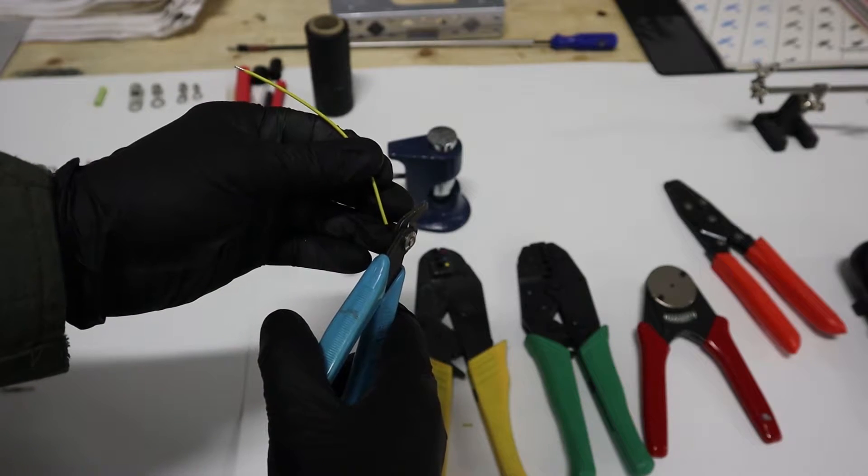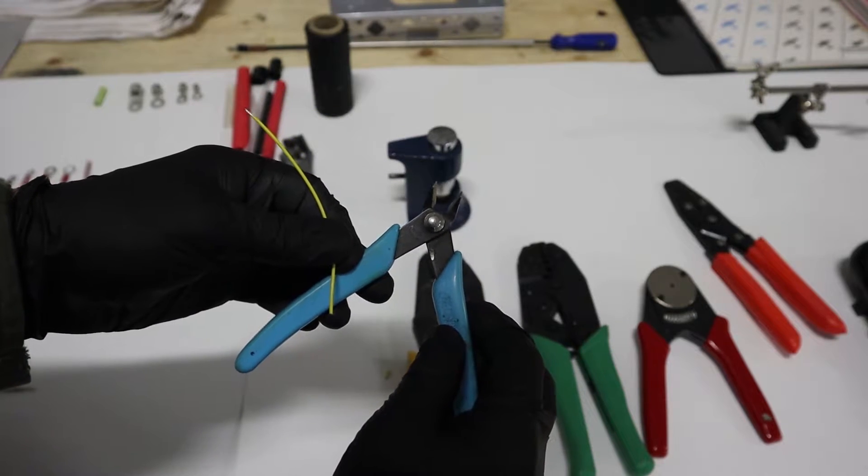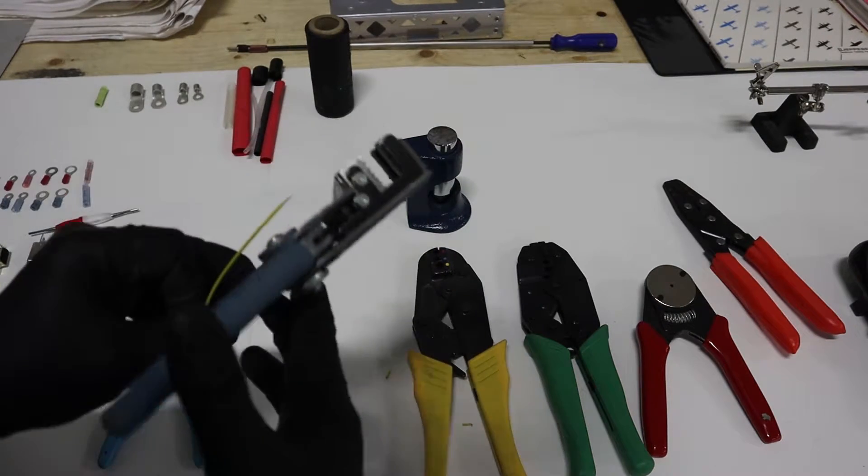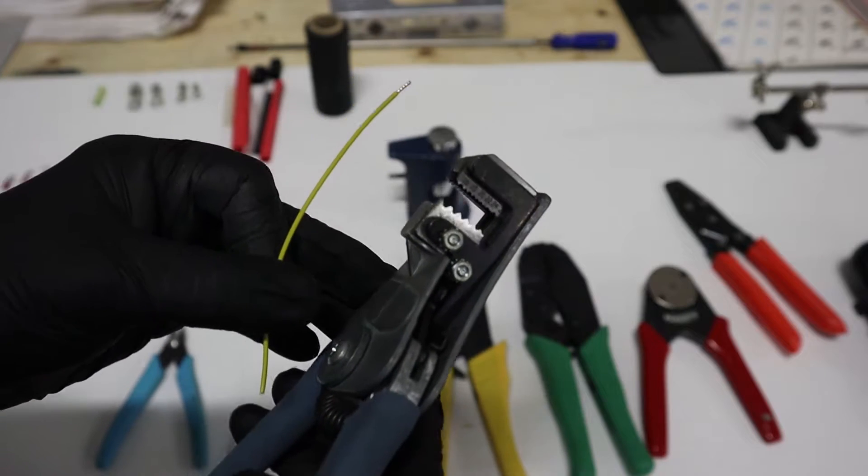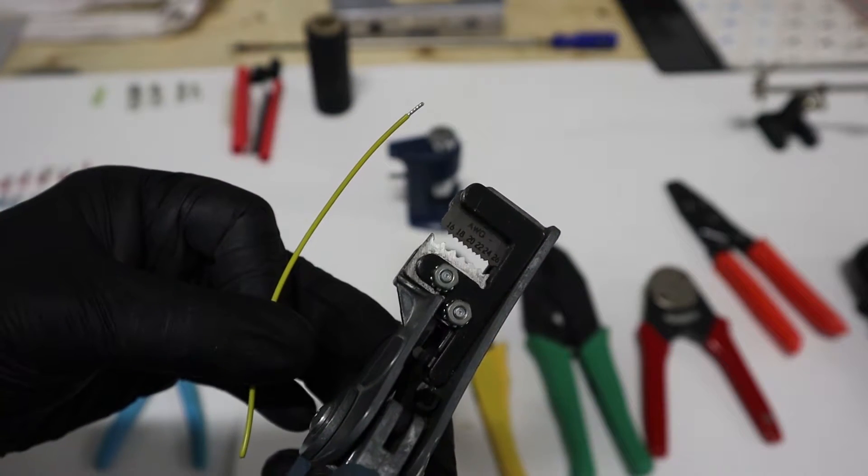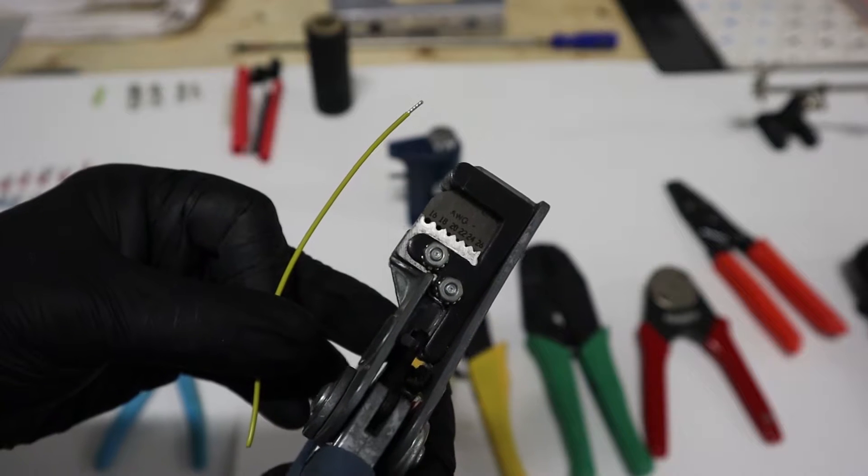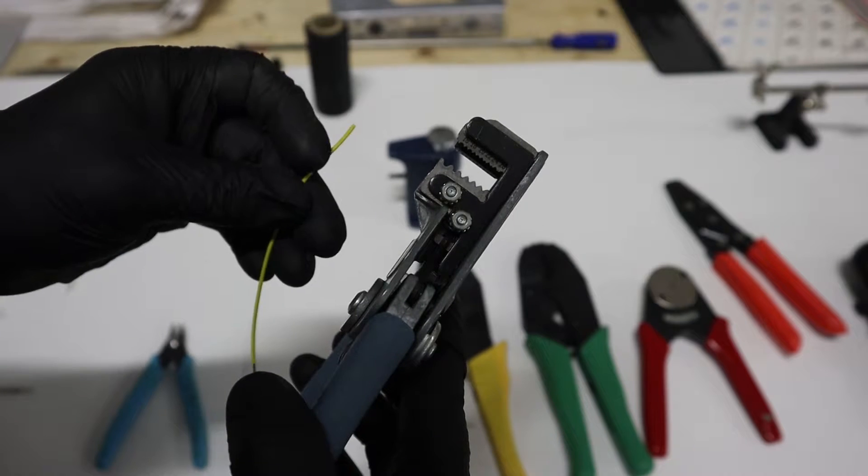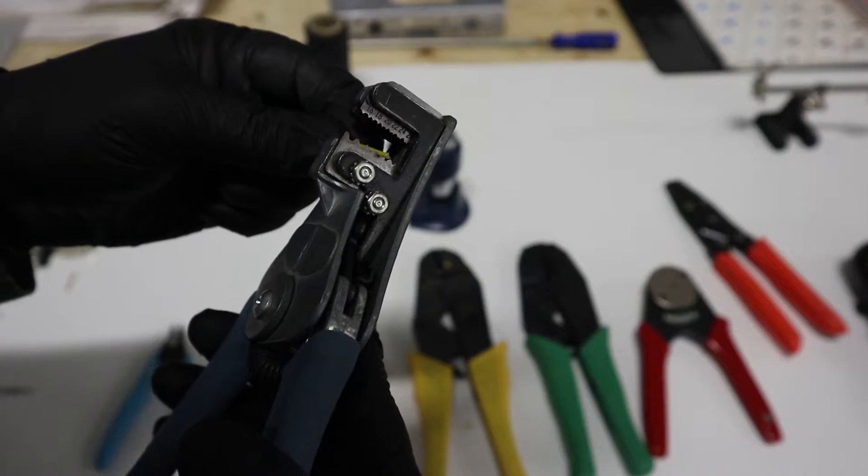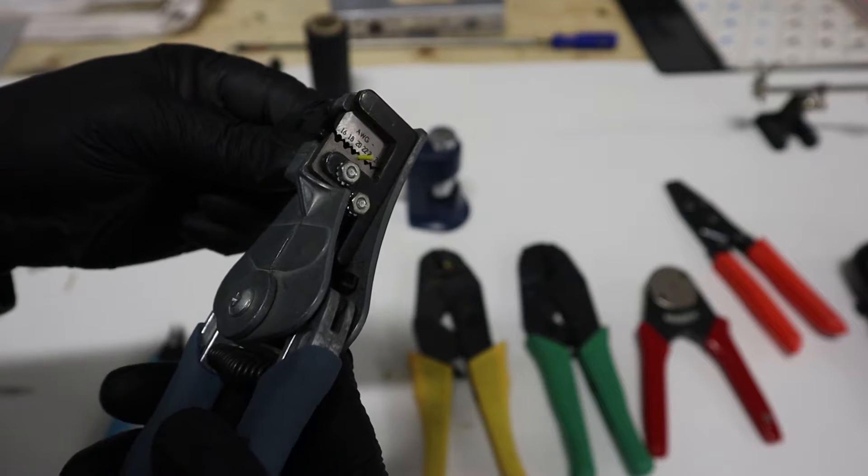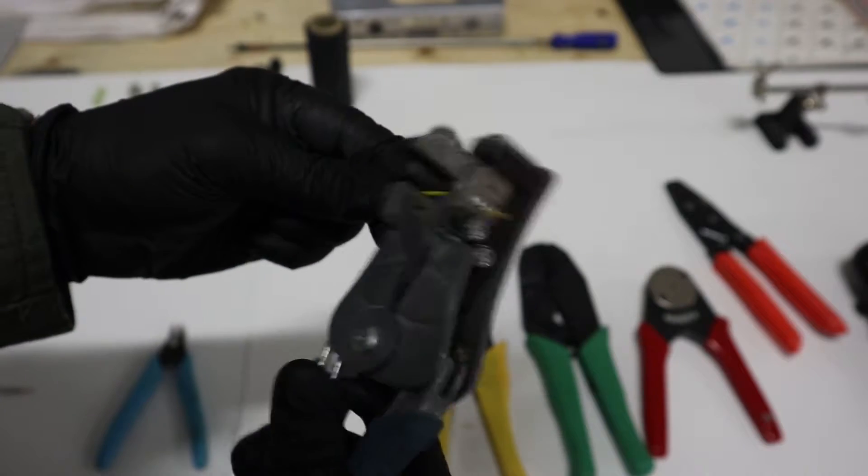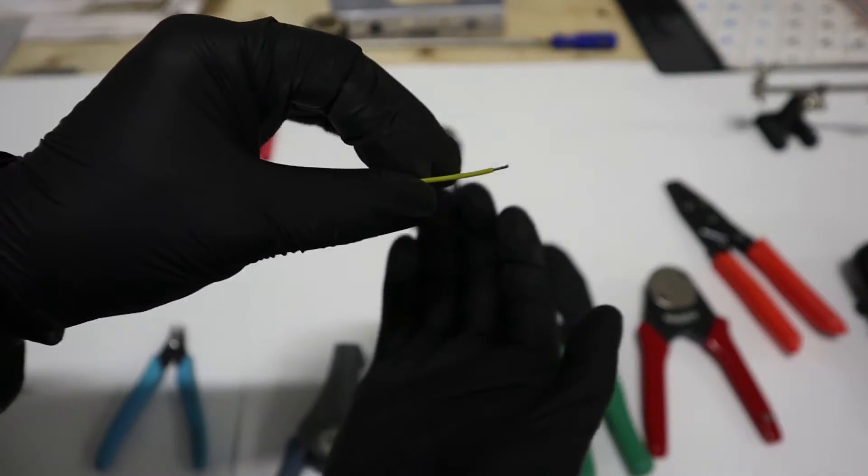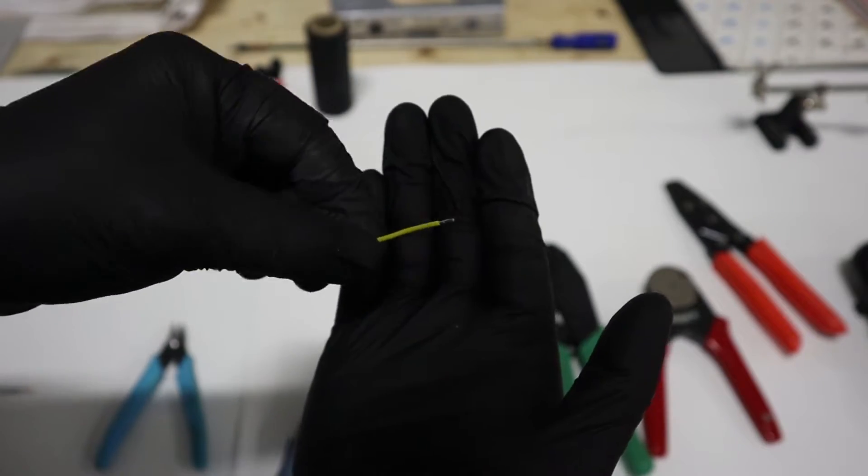Now wire strippers. These are the best ones that I've found. You want to get a pair of these that actually cut the shielding of the wire instead of ripping it off. There's lots of different kinds out there; don't get the cheap ones. These are not that expensive. You can get them from any kind of aircraft electrical supply store, and these ones here will actually cut around the shielding of the wire before it pulls it off, so it doesn't cause stress to the wire.